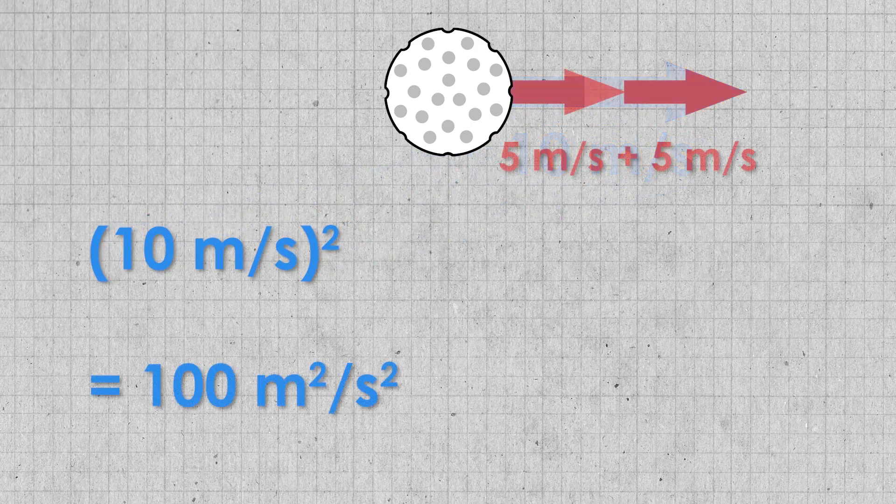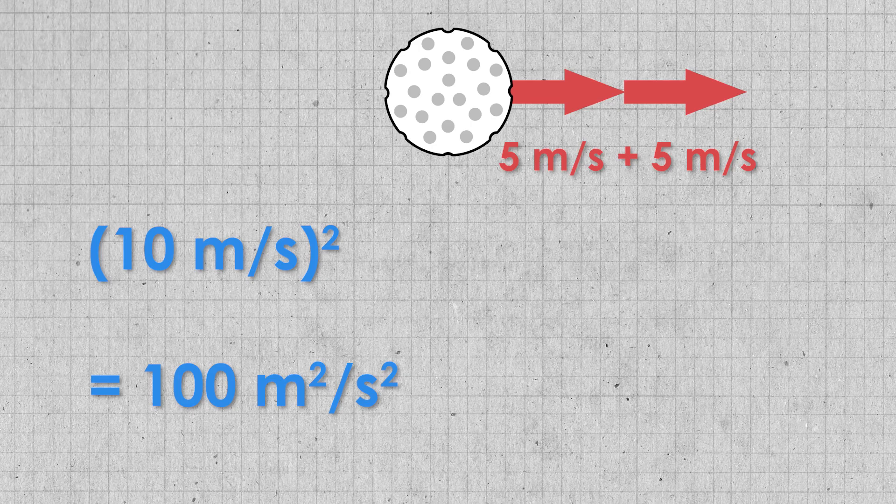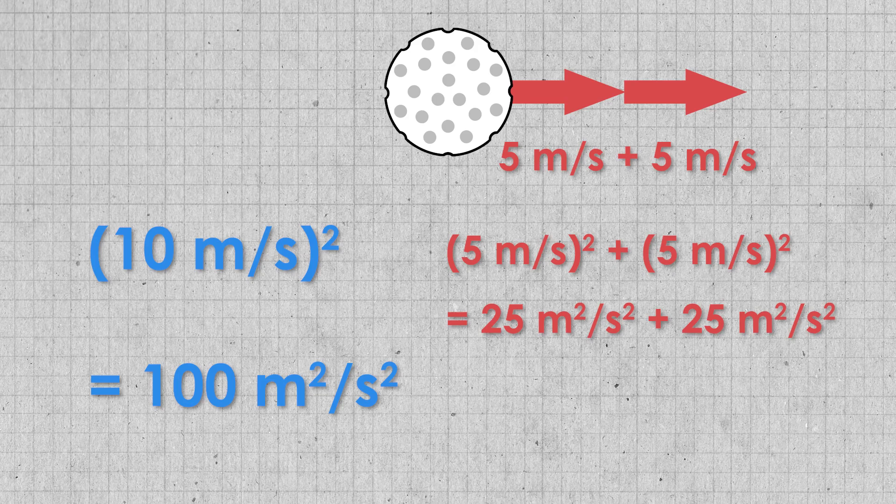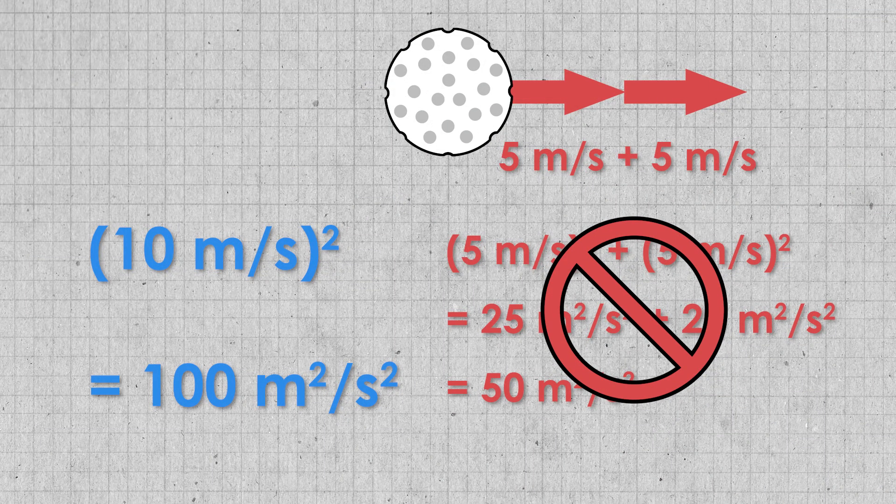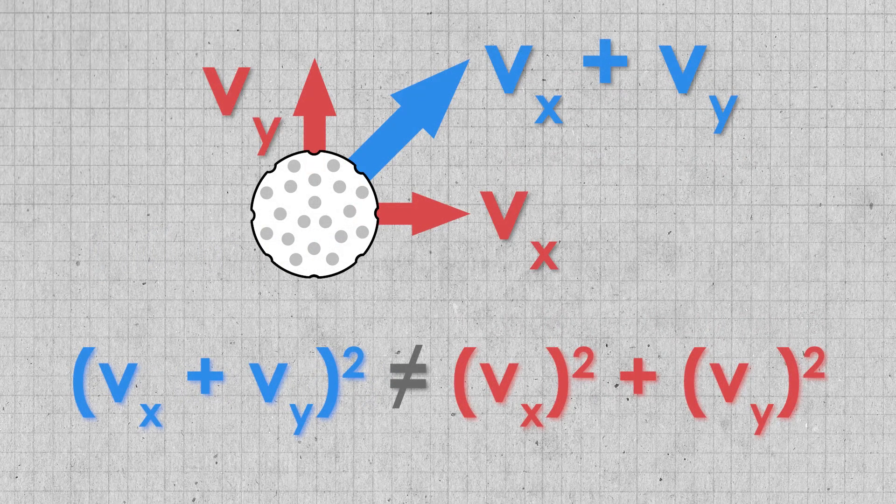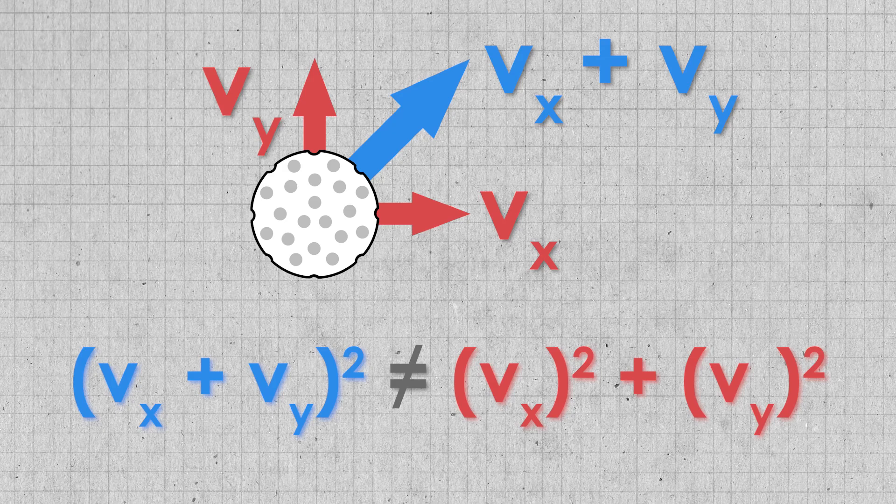But if we split it into two components of 5 meters per second each, and we square those, we get two values of 25, which sum to 50. That's not the same answer. Clearly, you can't break a velocity into separate components if you're going to square it. Now, in the golf ball example, it wasn't quite as simple as splitting it in half because we're using the Pythagorean theorem, but hopefully you can see how the same logic applies.